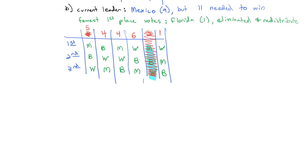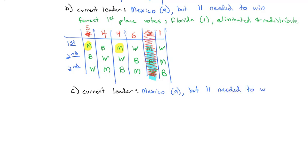Repeating the process again and checking if anyone has at least half the votes — Mexico is still on top with 9 votes, but 11 are needed to win. So we eliminate the one with the fewest first place votes, which is the Bahamas with only 4 votes.